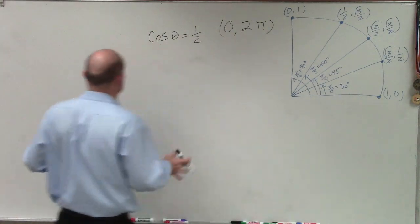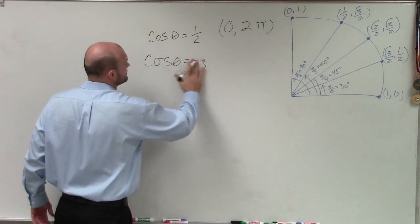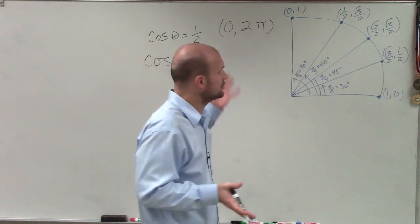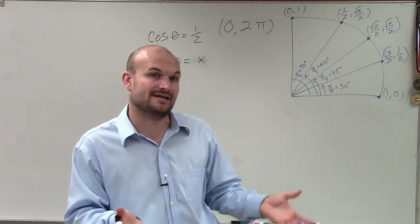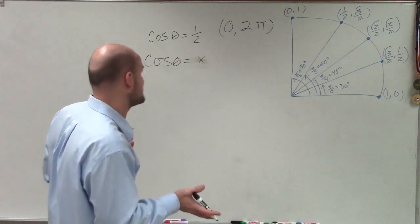So remember, when we're talking about the cosine of theta, the cosine of our angle theta represents not the y, but the x-coordinate on our unit circle. So all we need to do is look at our unit circle and determine when is my x-coordinate equal to 1/2, and what angle is that going to be?